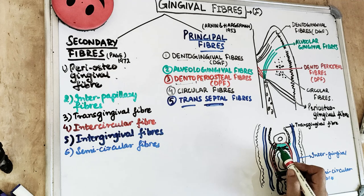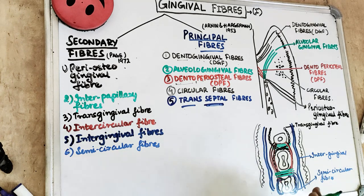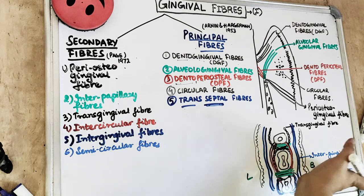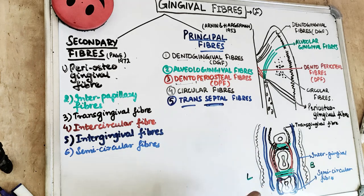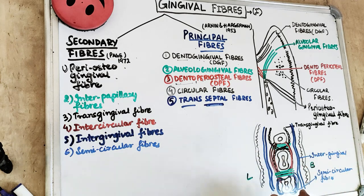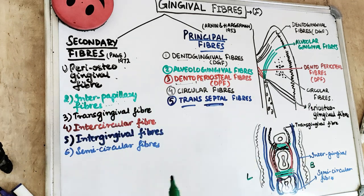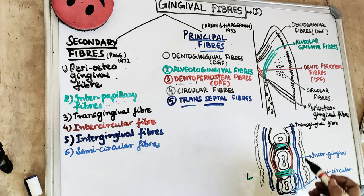The next secondary fiber is the inter-papillary fiber. These fibers are present in the interdental papilla. They extend in the facial-lingual (buccolingual) direction and are present in the interproximal region, supporting the gingival papilla — that is why they are called inter-papillary fibers.